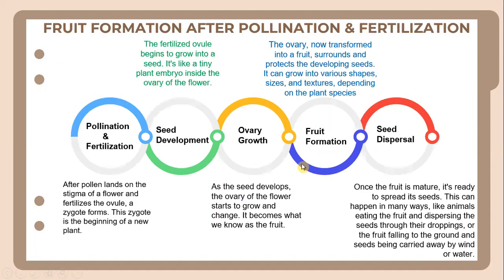Let's look at the steps of fruit formation after pollination and fertilization. First, after pollen lands on the stigma of a flower and fertilizes the ovule, a zygote forms — this zygote is the beginning of a new plant. Then, during seed development, the fertilized ovule begins to grow into a seed, like a tiny plant embryo inside the ovary of the flower. Next, as the seed develops, the ovary of the flower starts to grow and change, becoming what we know as the fruit.